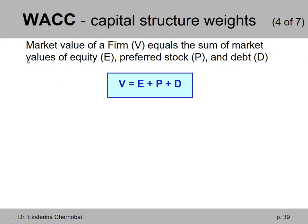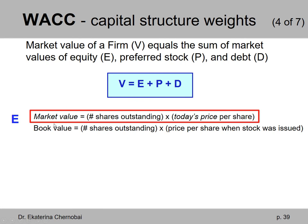What do we mean by market values? There's actually a difference between market value and book value. For example, looking at the first component E — capital E, which stands for equity — the market value of equity equals the number of shares of stock currently outstanding multiplied by today's price per share. The book value would equal the number of shares outstanding multiplied by the price per share when the stock was originally issued. The market value reflects today's price per share, which determines how much a firm is currently worth, and everything is based on current values of everything that comprises the firm value.